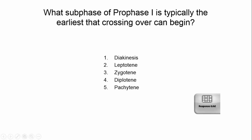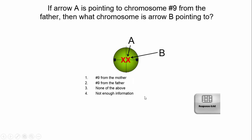What's the earliest sub-stage of prophase I where crossing over can occur? Using 'little zebra plays' — zygotene is actually the earliest it could happen, though pachytene is where most crossing over occurs. Another question: if arrow A points to chromosome number nine from the father, arrow B points to the same — number nine from the father — because it's one duplicated chromosome, so both halves are the same. And the homologous X-shaped chromosome would be number nine from the mother.